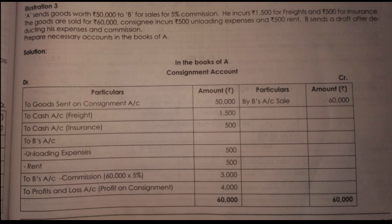If you have direct expenses, you will incur them. On the next credit side, let's go to sales. Sales is the closing stock. We have to record it. We will balance the sales, and from the sales and expenses, we will get gross profit.